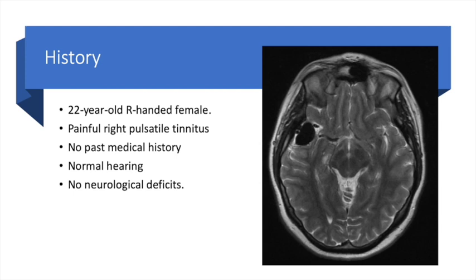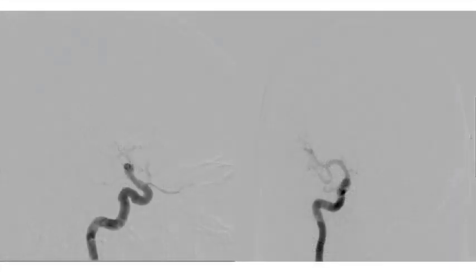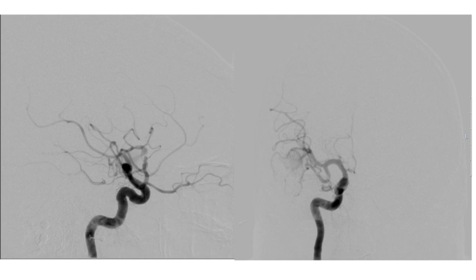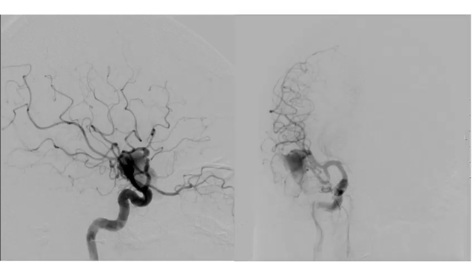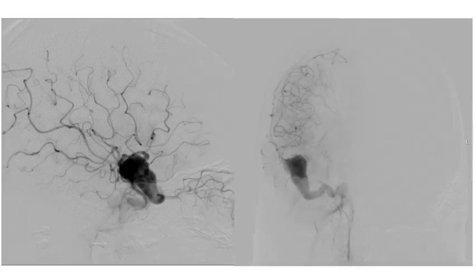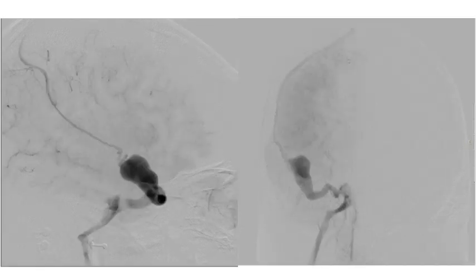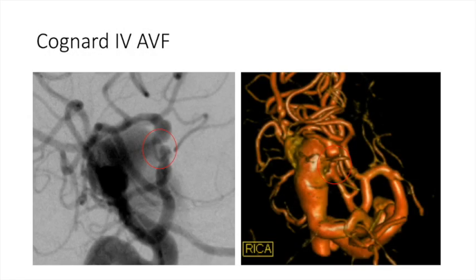An MRI scan shows a dilated venous varix indicating an arteriovenous anomaly within the right sylvian fissure. A right ICA injection shows fast arteriovenous shunting from the middle cerebral artery into the venous varix and eventually into the inferior petrosal sinus. The zone of arteriovenous fistulation is visible, but interventional neuroradiology colleagues did not feel they could confidently embolise this and safely preserve flow into the middle cerebral artery distally.